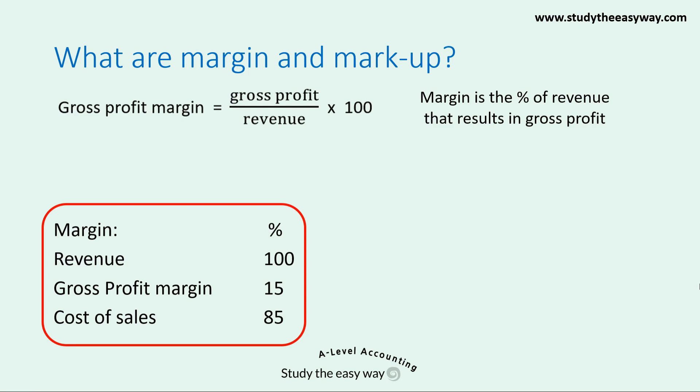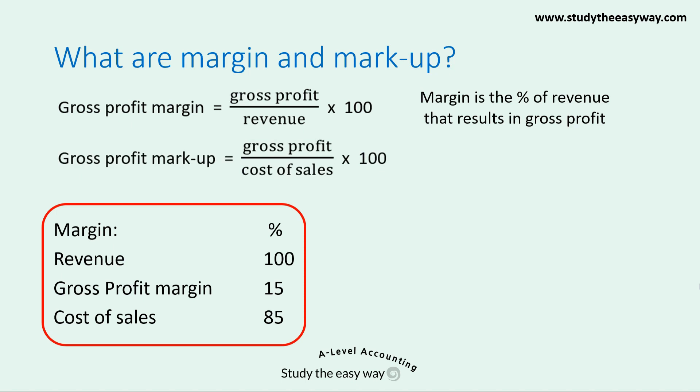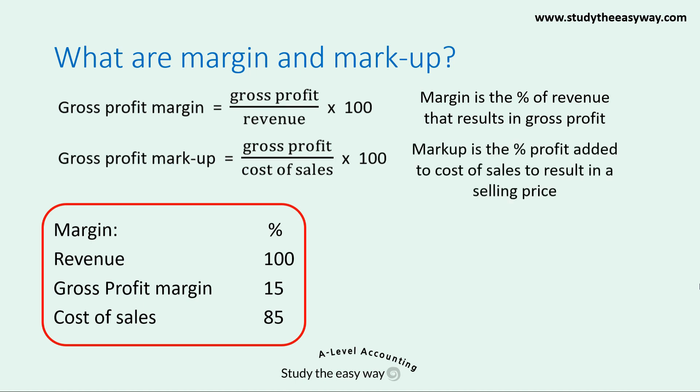Before we do this, we need to look at gross profit markup. Gross profit markup is calculated as gross profit divided by cost of sales, multiplied by 100. Notice the difference in the formula — we've now replaced revenue with cost of sales. So although these formulae look very similar, they are quite different. Markup is the percentage of profit added to cost of sales to result in a selling price.